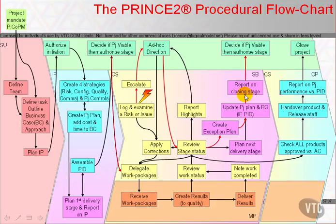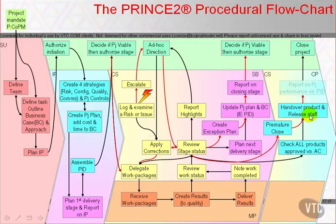The project board may decide that the project should end here and now. The exception report or the results of exception planning may trigger the premature closure of the project through closing a project's activity — specifically, prepare premature closure — which results in checking the status of handed-over products and maybe reclaiming some, releasing staff, reporting on project performance, and then closing the project.